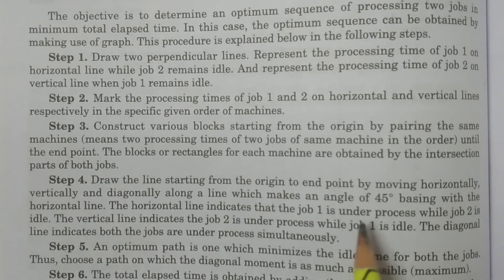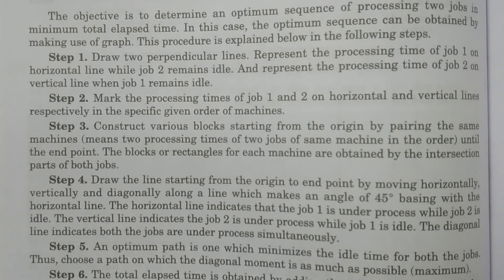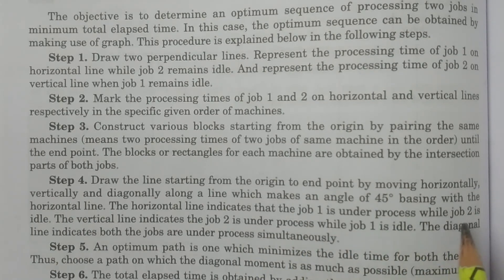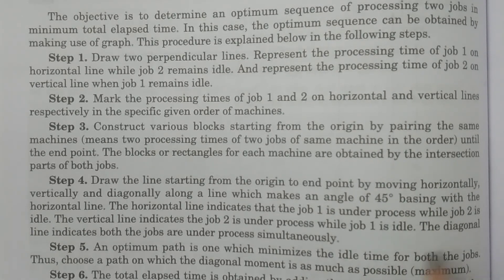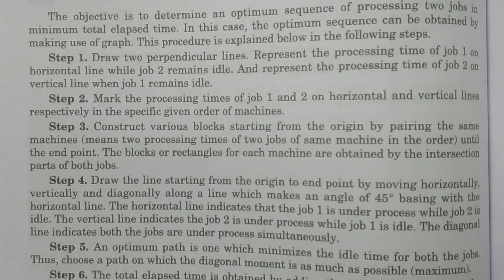The horizontal line indicates that job one is under process while job two is idle. The vertical line indicates job two is under process and job one is idle. The diagonal line indicates both jobs are under process simultaneously through the machines. From this path, we can obtain the idle times of job one and job two.